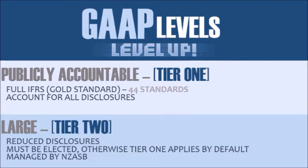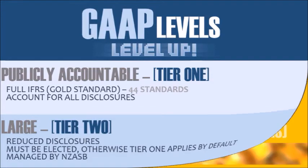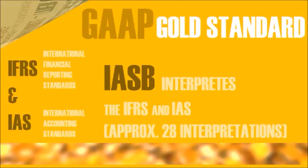NZASB manages Tier 2 and decides how much disclosure is required from Tier 2 companies — this is decided purely in New Zealand. The gold standard GAAP in New Zealand includes International Financial Reporting Standards and International Accounting Standards. Currently there are 44 standards and 28 interpretations in New Zealand.